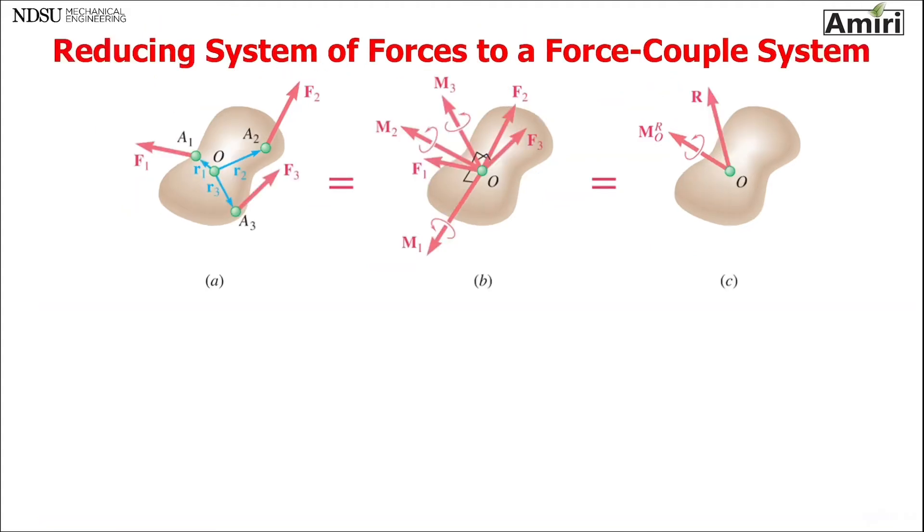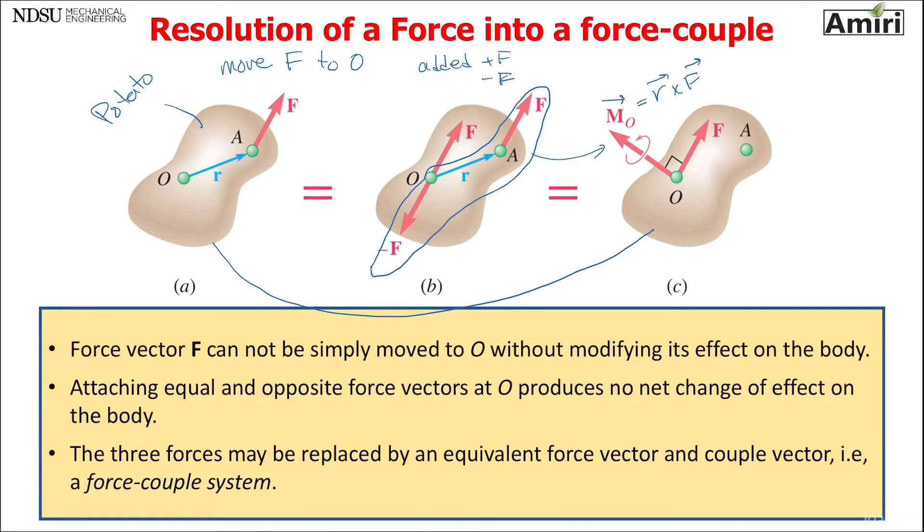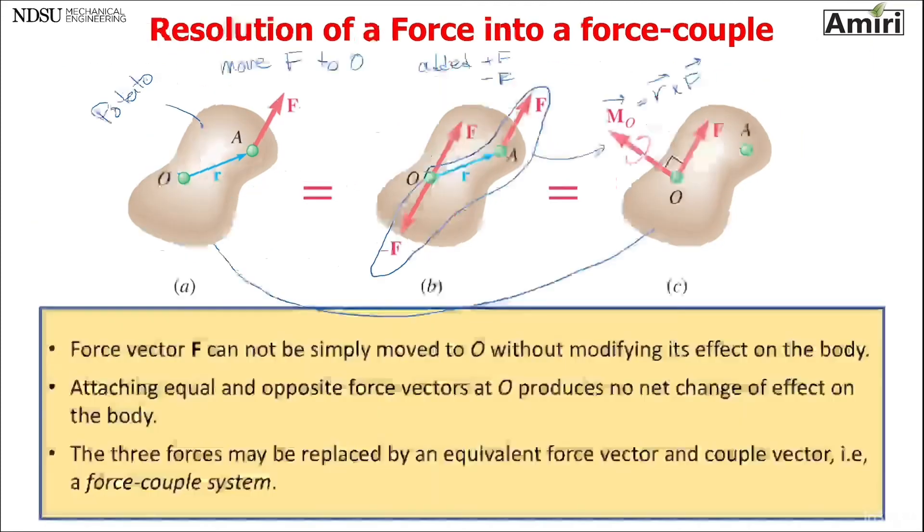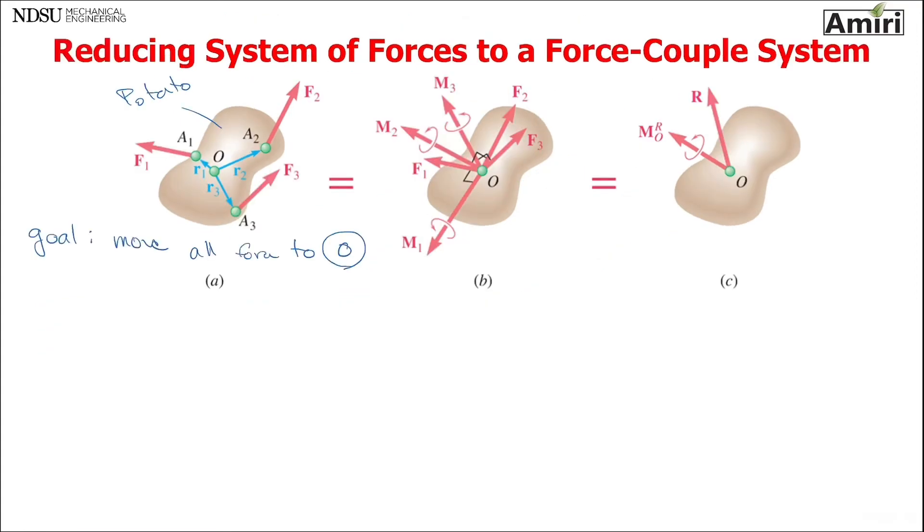Now let's look at a more crazy potato here. It has bunch of forces. And the goal is move all forces to O and hopefully simplify and replace it by something better. And again, look here, what happened when I moved. So kind of ignore the middle image. Just look at A and C. When I moved it, I created an R cross F also. So F is moved right there, but I've also added R cross F.